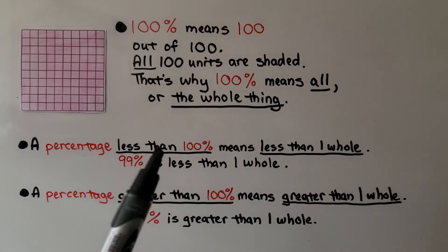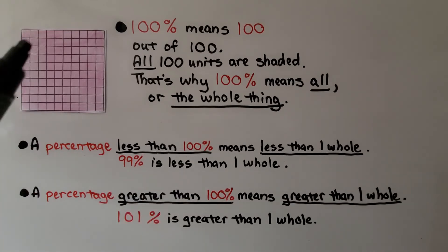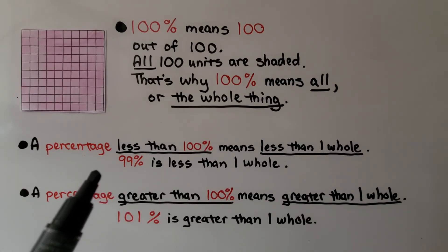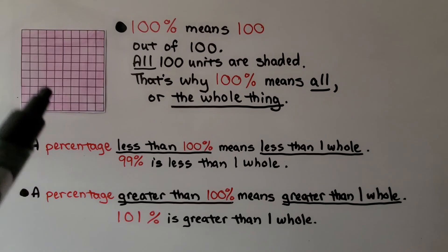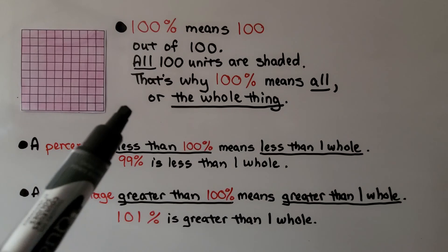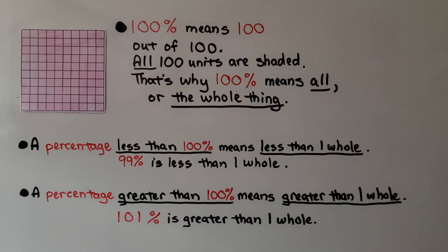And a percentage less than 100% means less than one whole. So 99% would be less than one whole. We would only shade in 99 of these units. And a percentage greater than 100% means greater than one whole. So 101% is greater than one whole. We would need a second grid, and we would shade all 100 of these and one of the units in the second grid.